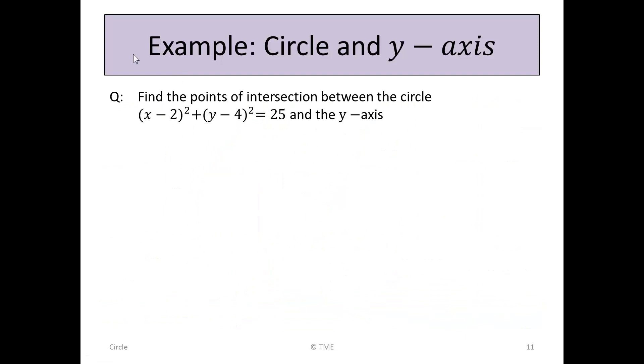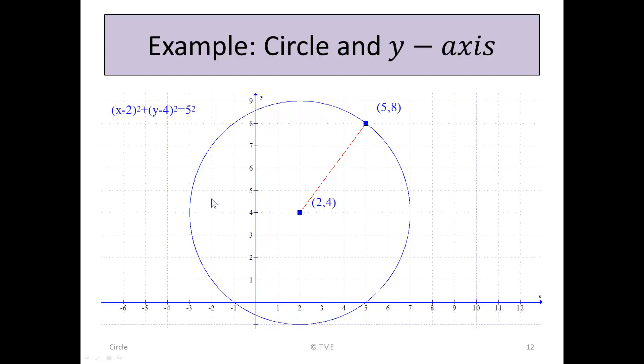We now turn to the points of intersection between the circle (x - 2)² + (y - 4)² = 25 and the y-axis. Here we see it again in its original form. We can see that it cuts the y-axis somewhere short of 0, somewhere between 0 and -1, and somewhere between 8 and 9. Might say 8.5 or -0.5, approximately. How do we find those points?